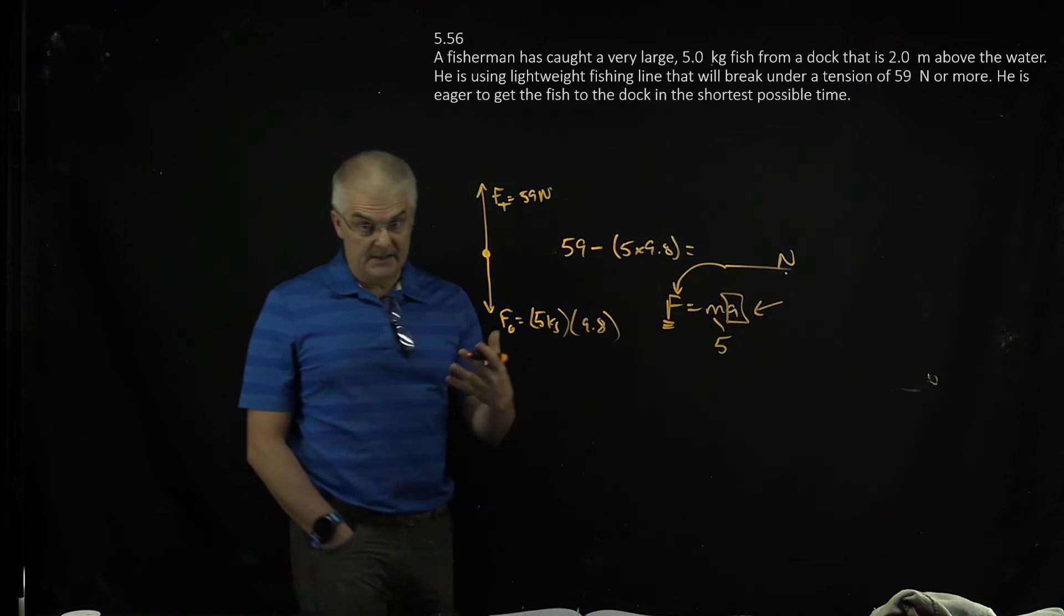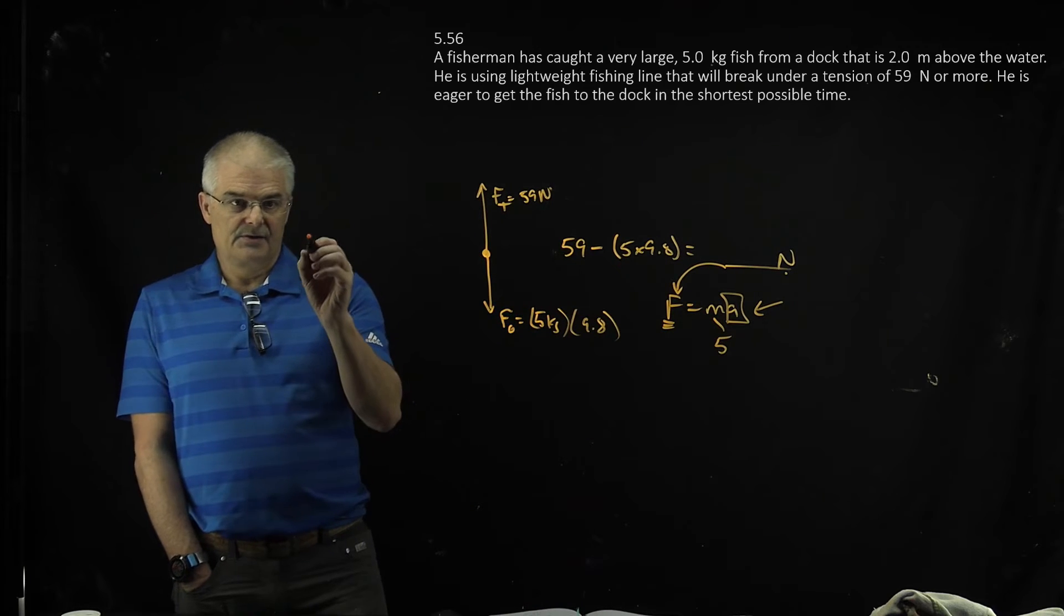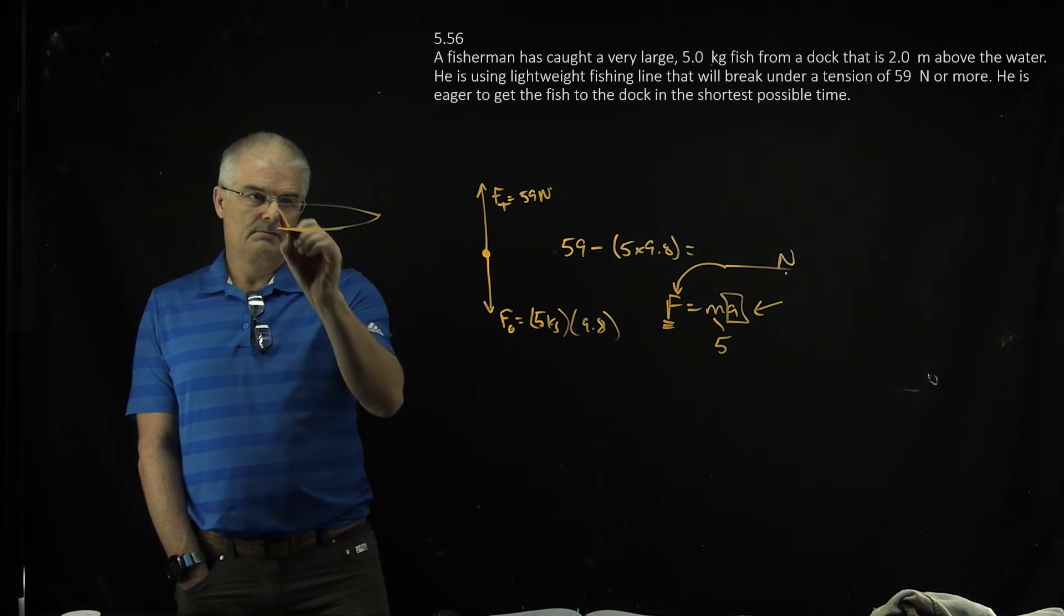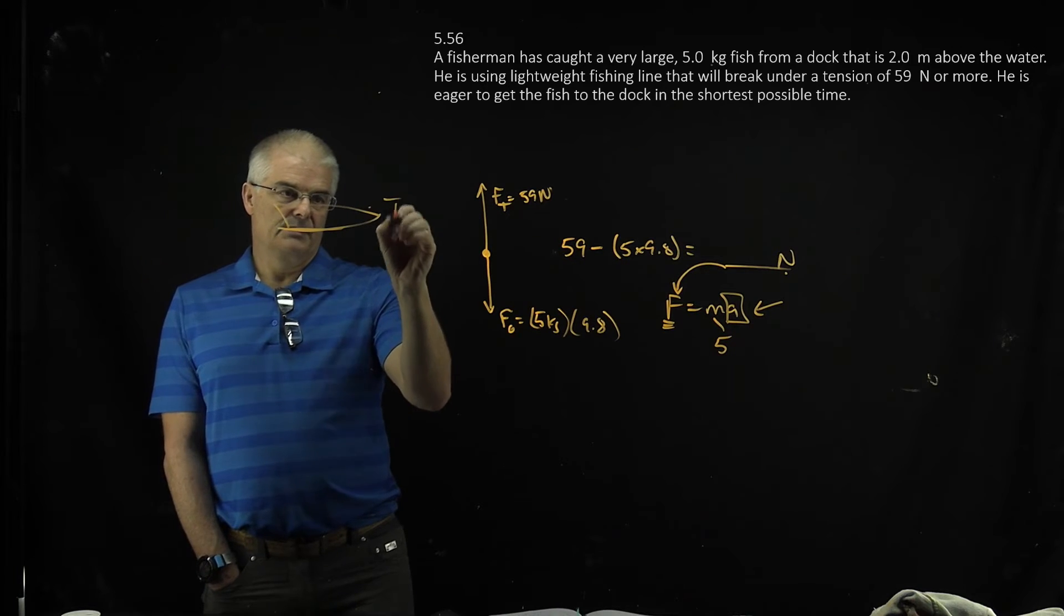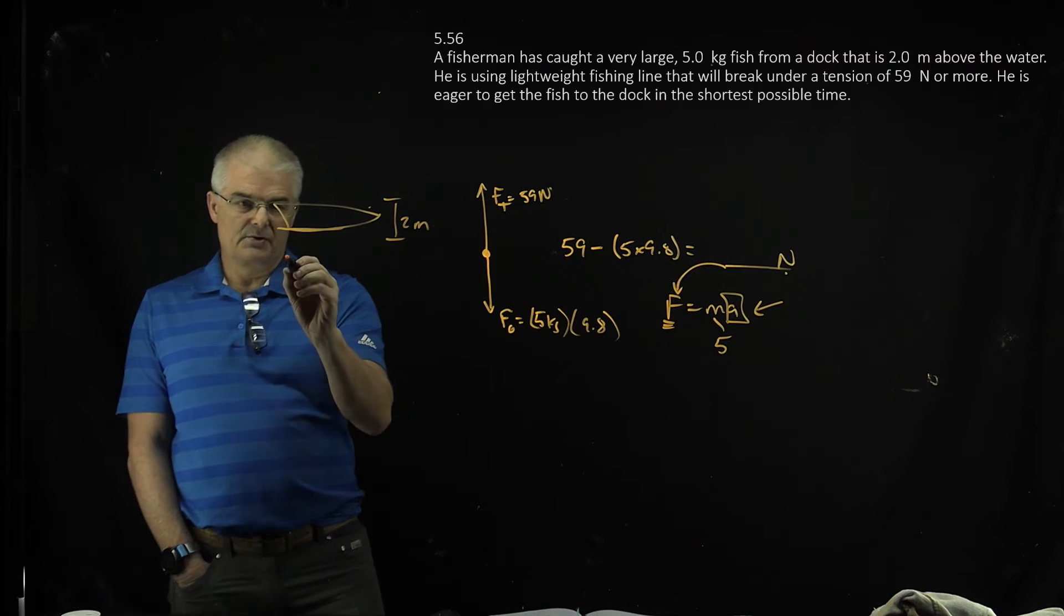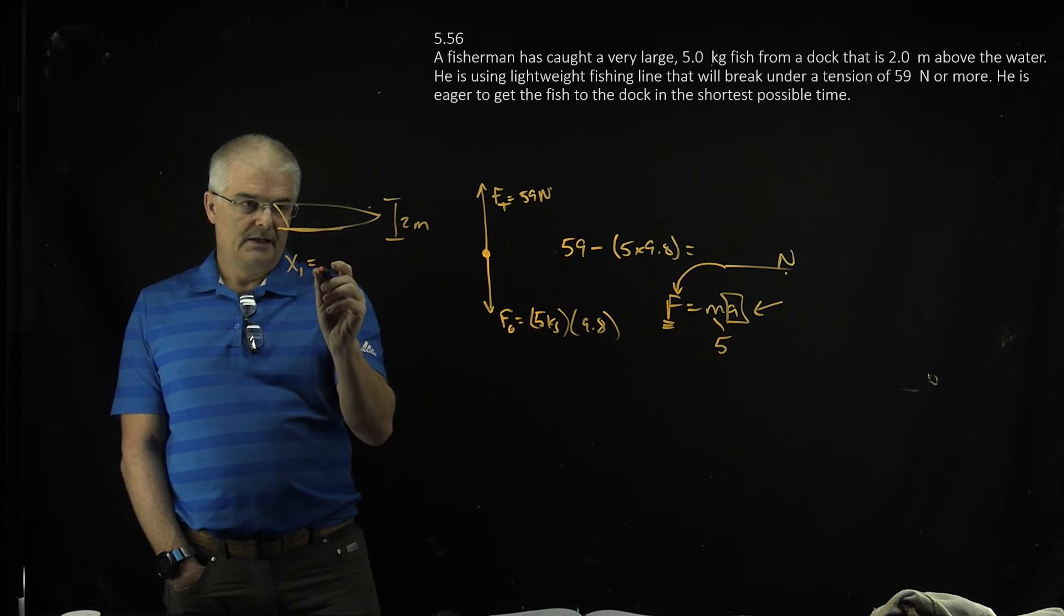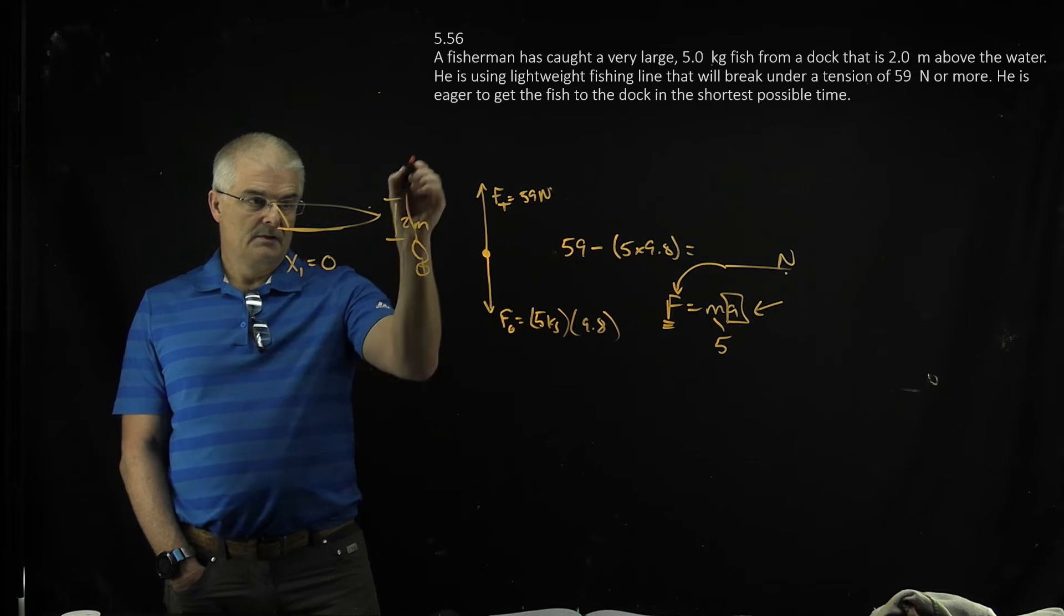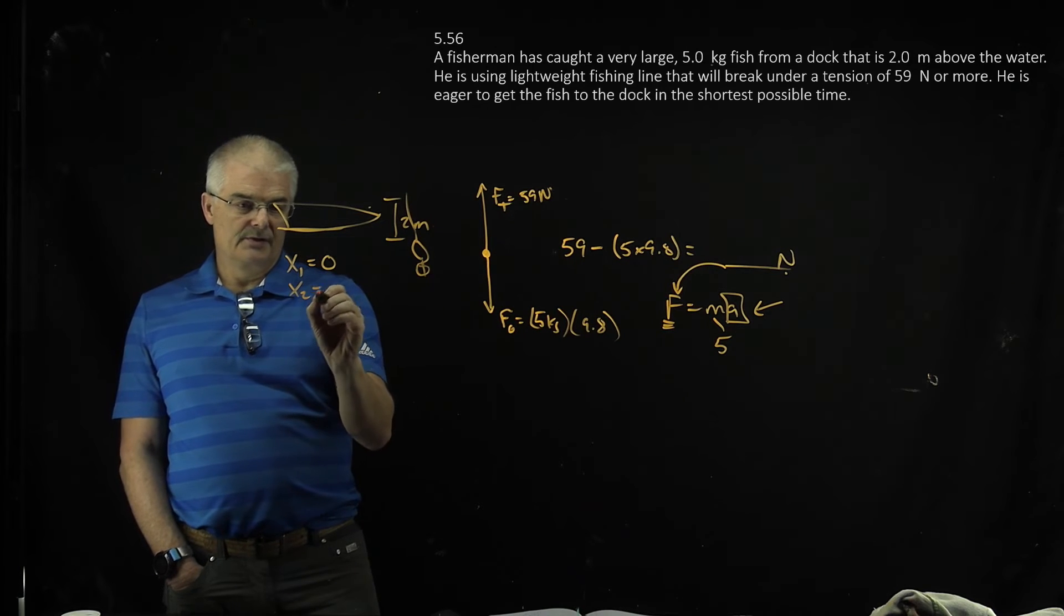Because then it becomes a kinematics question, right? Because the fish is, if you will, let's draw the picture of the boat. And the boat is 2 meters above, and so I can say X1 is 0. He started, the fish is right here, right? And X2 is 2 meters.